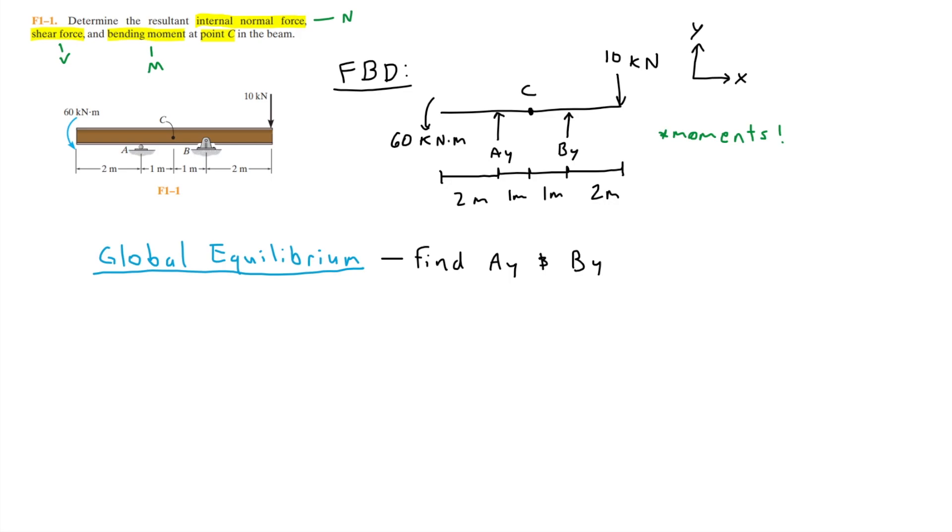I'm going to call the left end D and the right end E. For example, I can start by summing up the moments about point A. We'll set the sum of moments at A equal to zero, assuming counterclockwise as positive. Starting off to the left of A, we have the 60 kilonewton meter moment, which is positive.